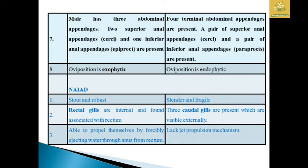In male dragonflies there are three abdominal appendages: two superior anal appendages called cerci and one inferior anal appendage called the epiproct. In damselflies there are four terminal appendages: a pair of superior anal appendages called cerci and a pair of inferior anal appendages called paraprocts.